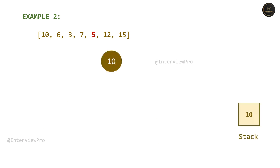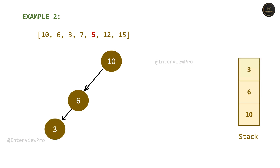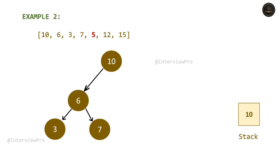Now let's see how this works for the second example. We have node 10 — push it onto the stack. Then 6 — push it. Then 3 — push it. Then 7 — we have to backtrack, so we pop from the stack and insert 7. We removed all references for left and root of the subtree. Now insert 7 onto the stack. Now we have 5. We cannot insert it to the right of 7 because it is less than 6. So this is not a valid binary search tree pre-order sequence.